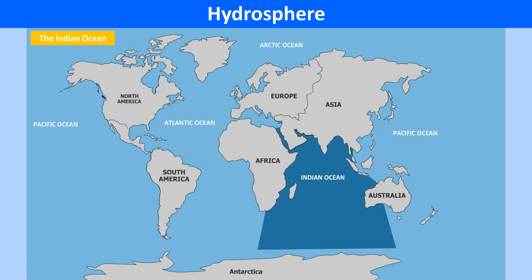It has a highly indented coastline, thereby resulting in natural harbors and ports. The Indian Ocean is the third largest ocean, covering one-seventh of the Earth's surface. The average depth of the Indian Ocean is about 3,890 meters. It is the only ocean named after a country, India. It is triangular in shape.